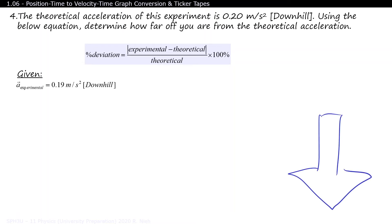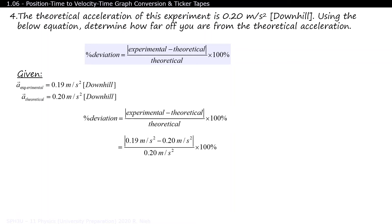We're going to compare it to the theoretical value of 0.20 meters per second squared. When you sub the values into the formula, you might notice two vertical bars in the formula. This is to find the absolute value of 0.19 minus 0.20.